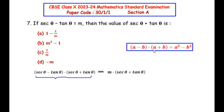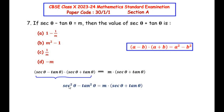Using the identity (a - b)(a + b) = a² - b², where a = sec θ and b = tan θ, the left-hand side simplifies to sec²θ - tan²θ, which equals m(sec θ + tan θ) on the right-hand side.